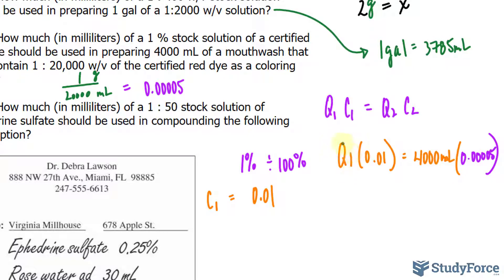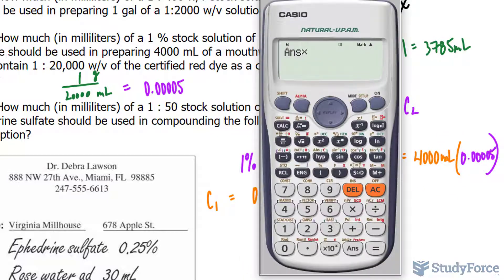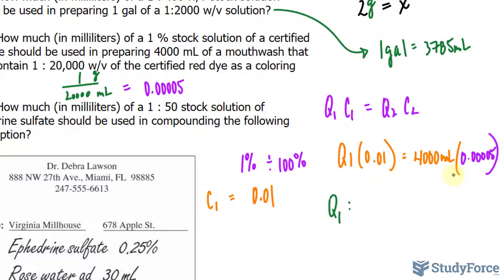So we isolate for Q sub 1, and that can easily be done by multiplying the right side, so this number times 4,000, and that is equal to 0.2. So the right side of the equation, I'll just erase that for a moment, the right side of the equation is 0.2.